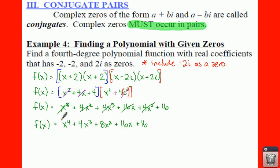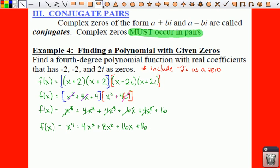So that is your degree of 4 polynomial. When you start with, even though it only gives you 3 zeros, you have to make sure you add in the 4th, because complex zeros always occur in pairs.